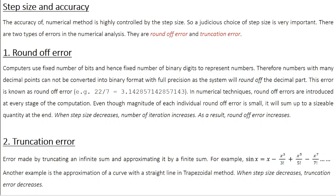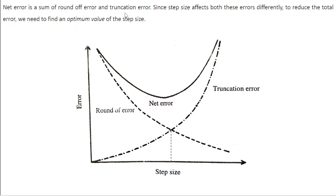So when step size decreases, the truncation error decreases, but the round-off error increases. Step size affects round-off error and truncation error in completely opposite ways. The total error in any numerical technique is the sum of round-off error and truncation error, and since step size affects both differently, to reduce the total error we need to find an optimum value of the step size.